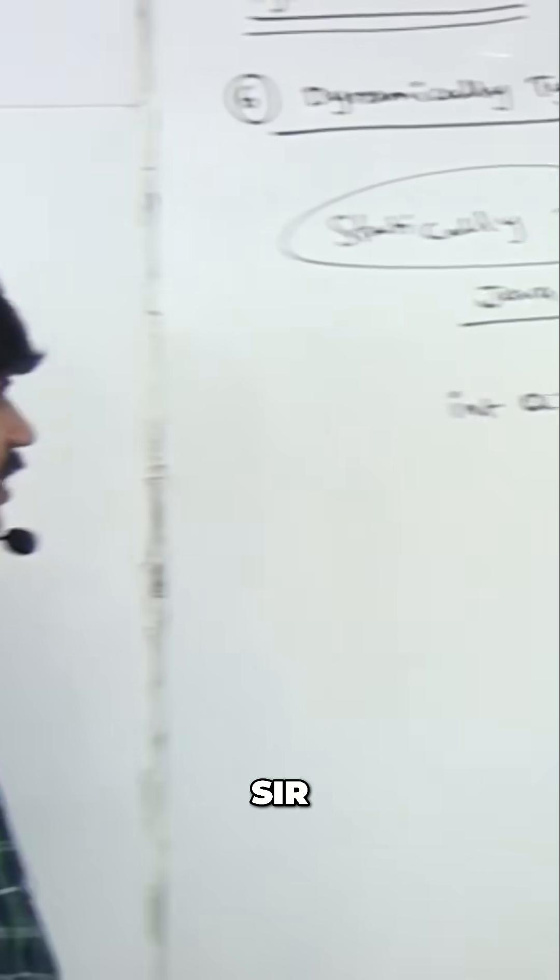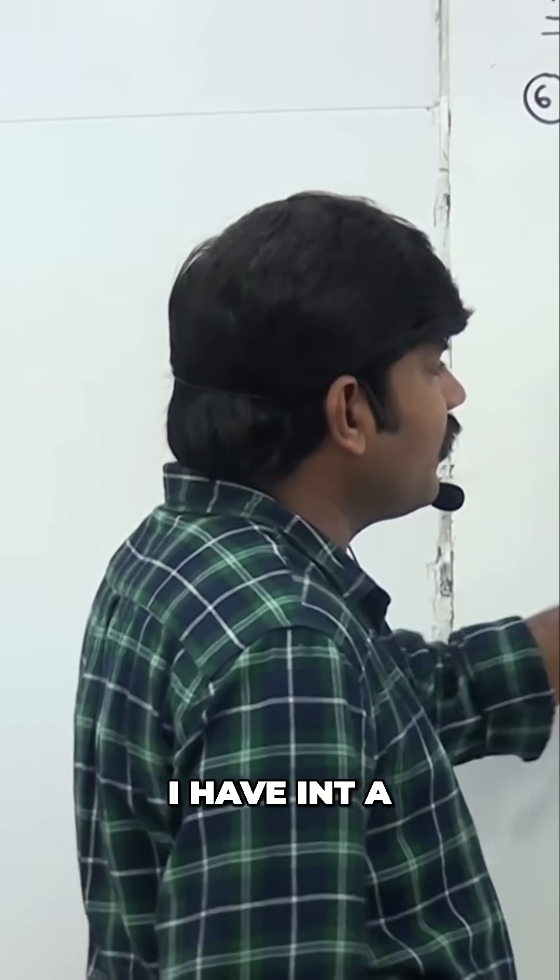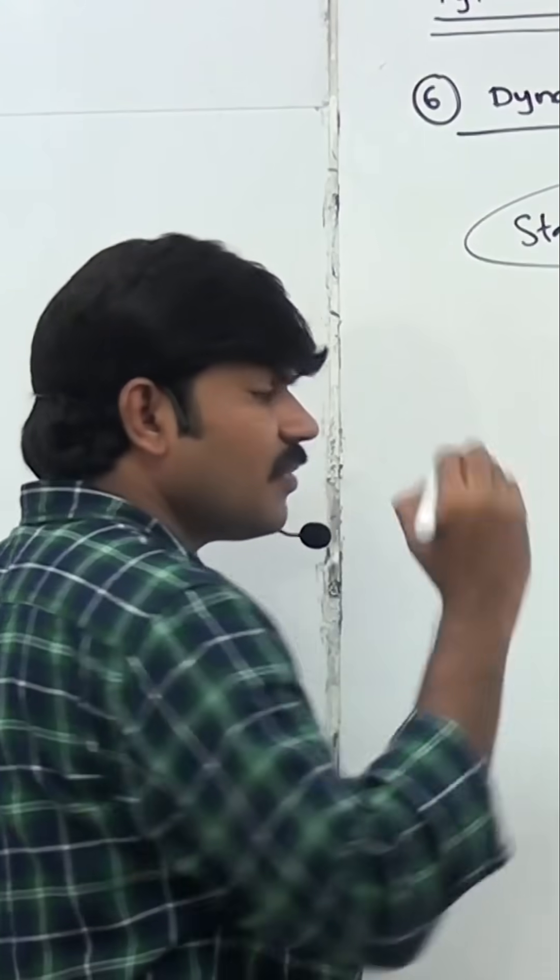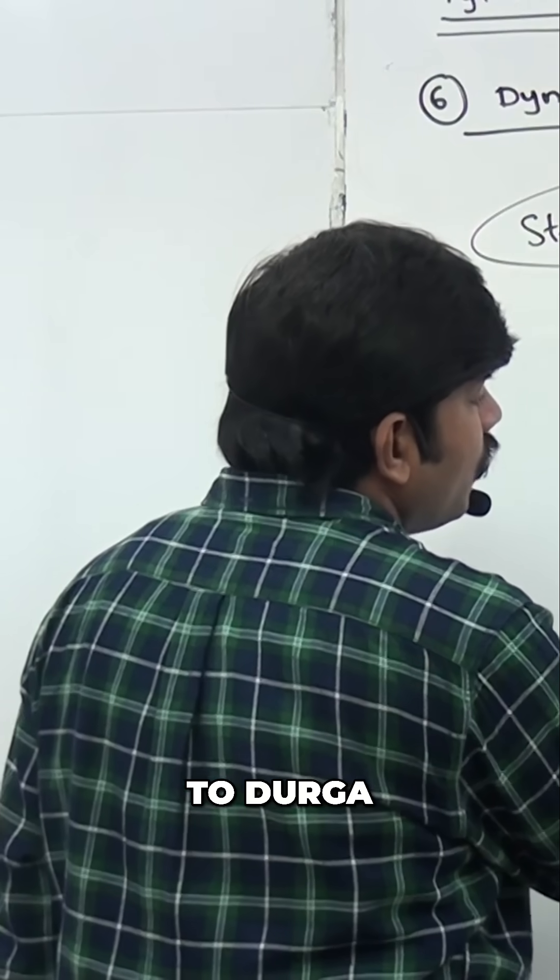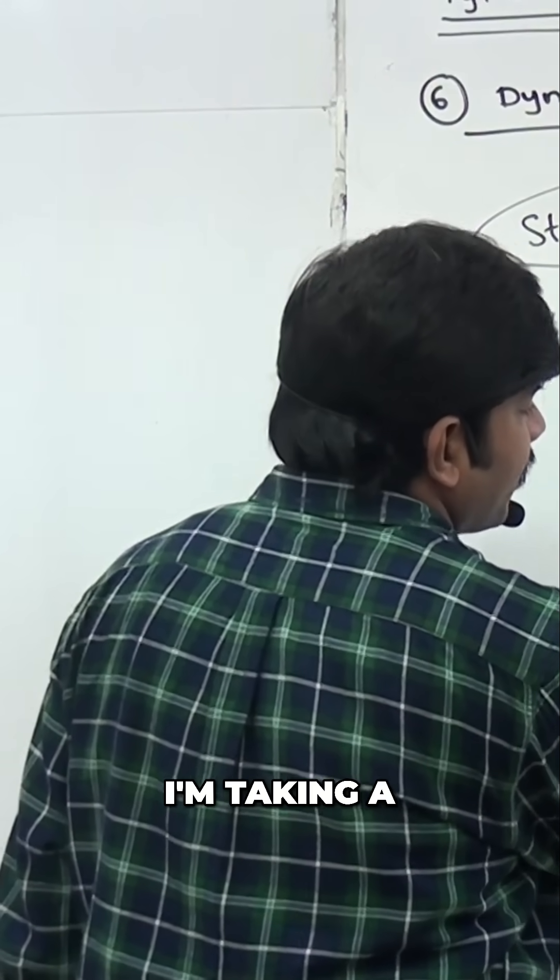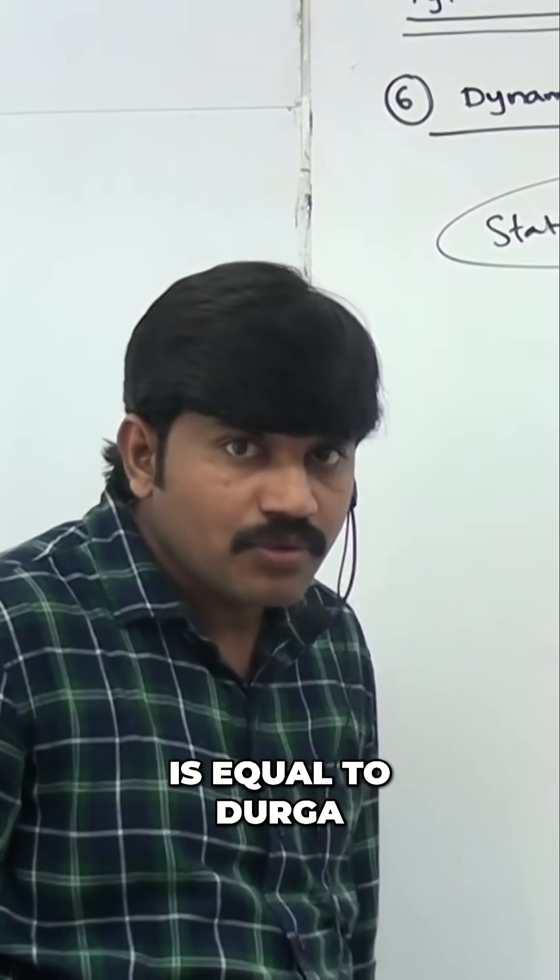What is that advantage? Observe this one, sir. In Java, I have int i equals 10. After some time, I'm taking a equals durga, like this. I'm taking a equals durga. Durga is a string type, string value I'm trying to assign.